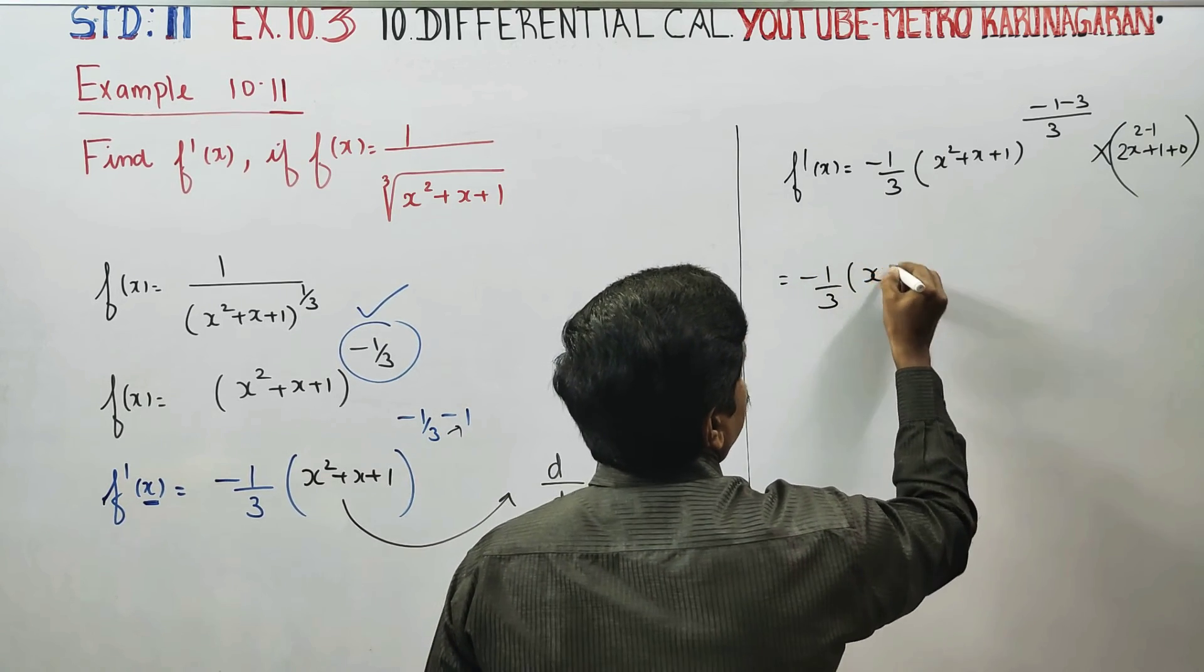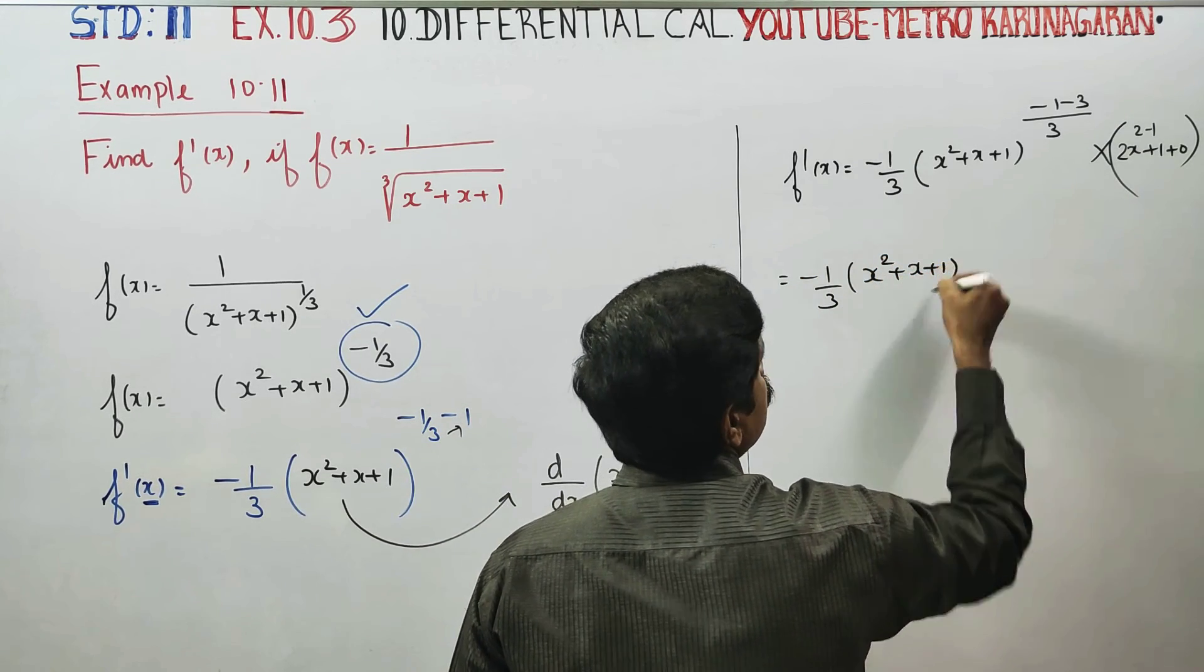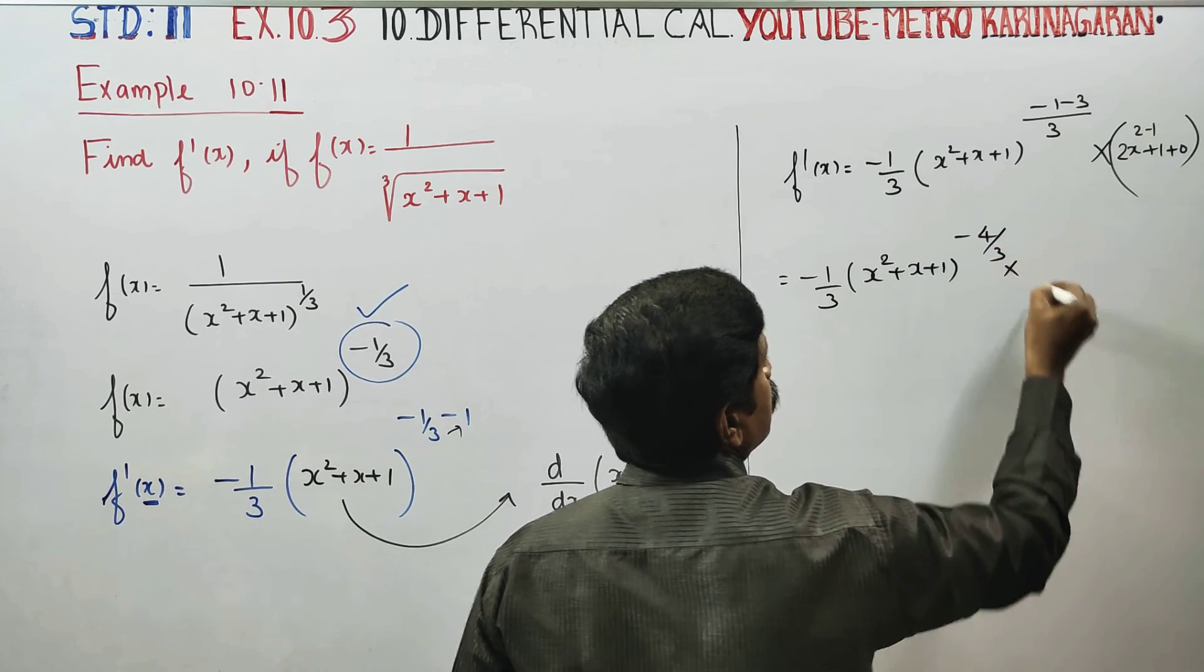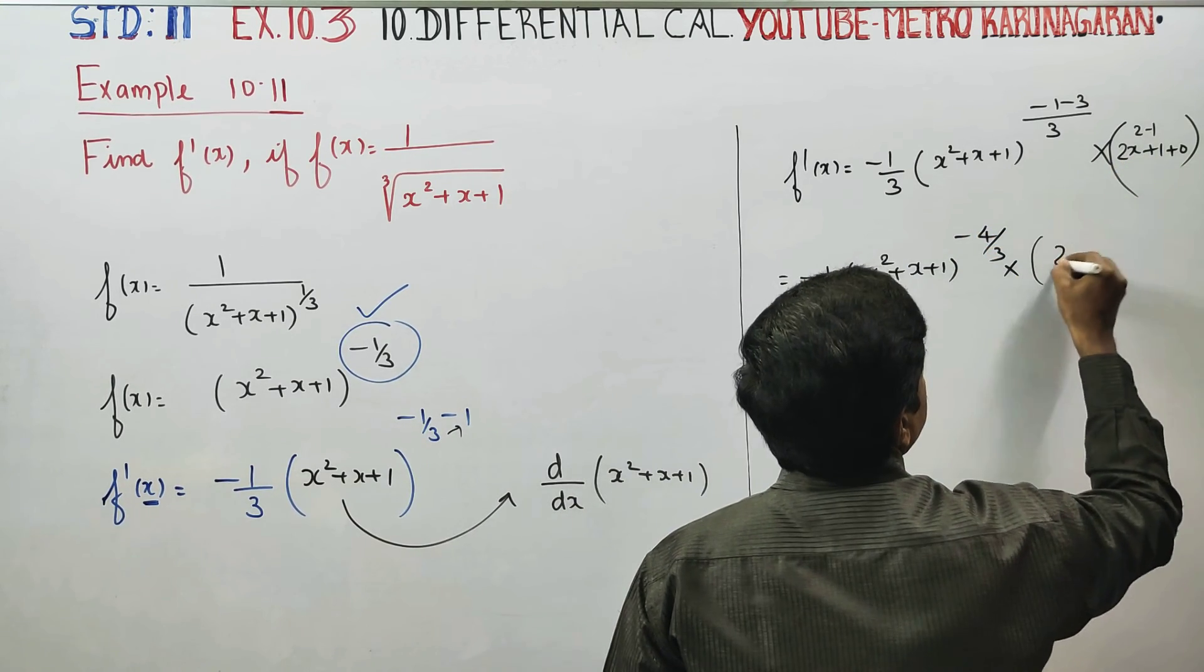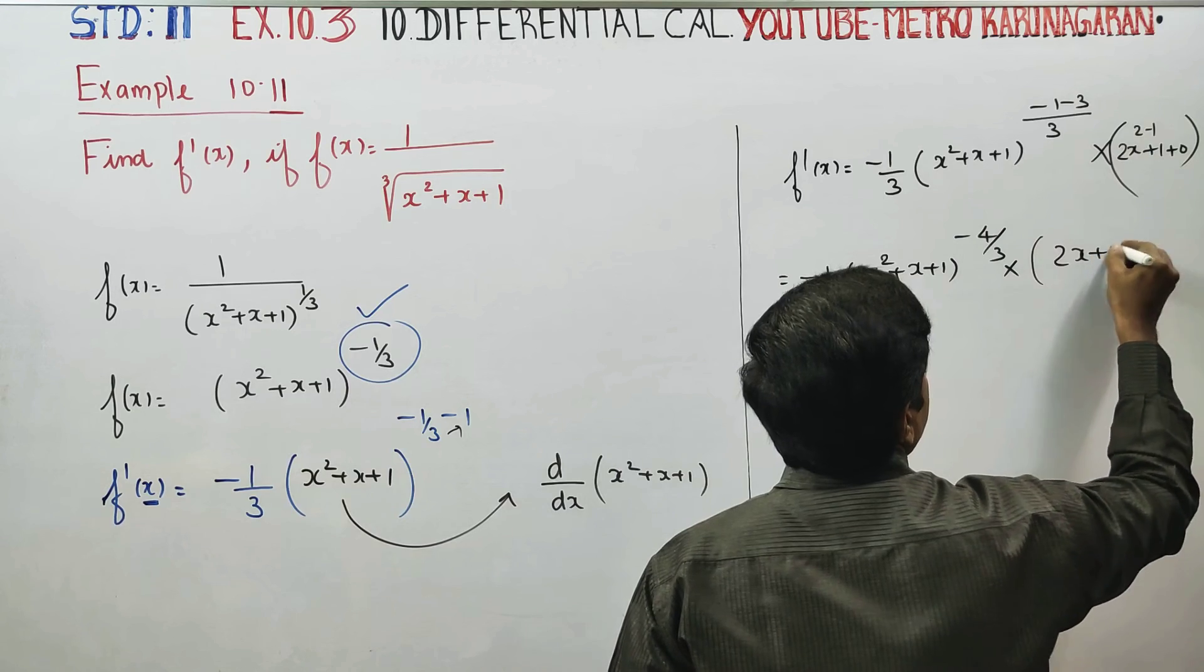Minus 1 by 3, x square plus x plus 1, that is minus 4 by 3, into simply 2x plus 1.